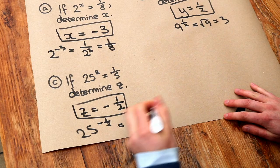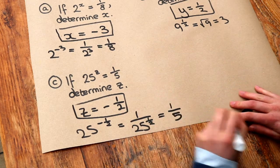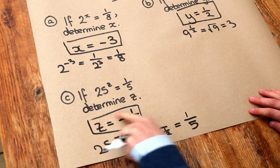And then 25 to the half just means the square root of 25, which is 1 over 5. And that's what we have. So we do have the correct answer here.